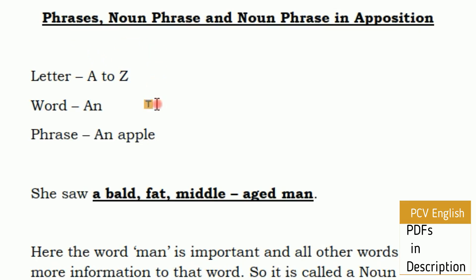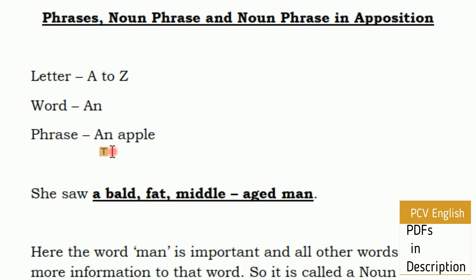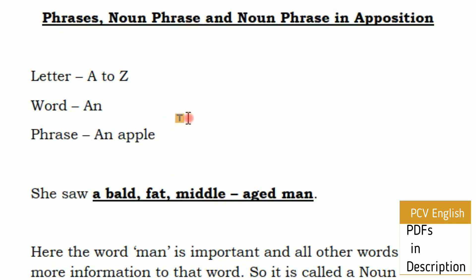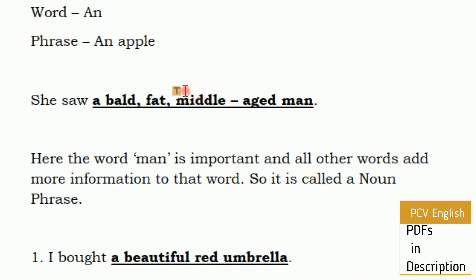First, we will talk about the phrase in detail. Let's look at the first letter in the first class. Letters are in the second class. Now, the phrase is made of letters and words. The phrase is the clause. The clause is the sentence — after the sentence is the hierarchy. The language builds one by one.